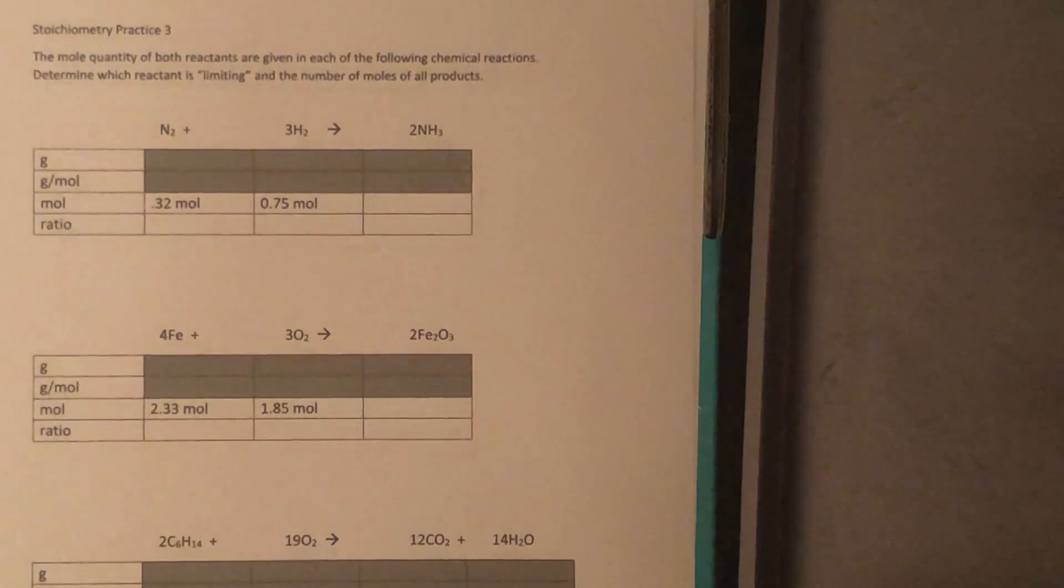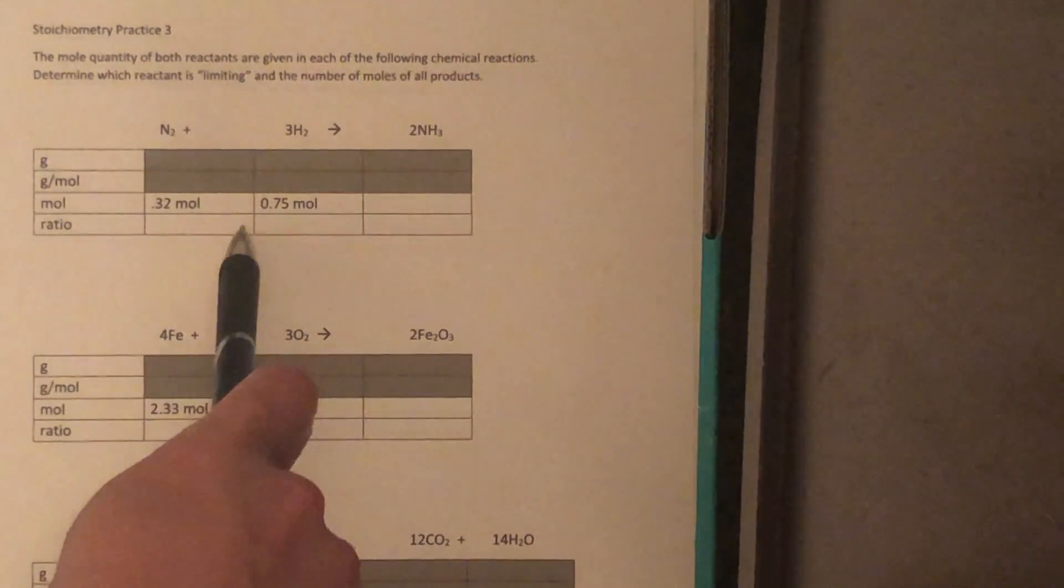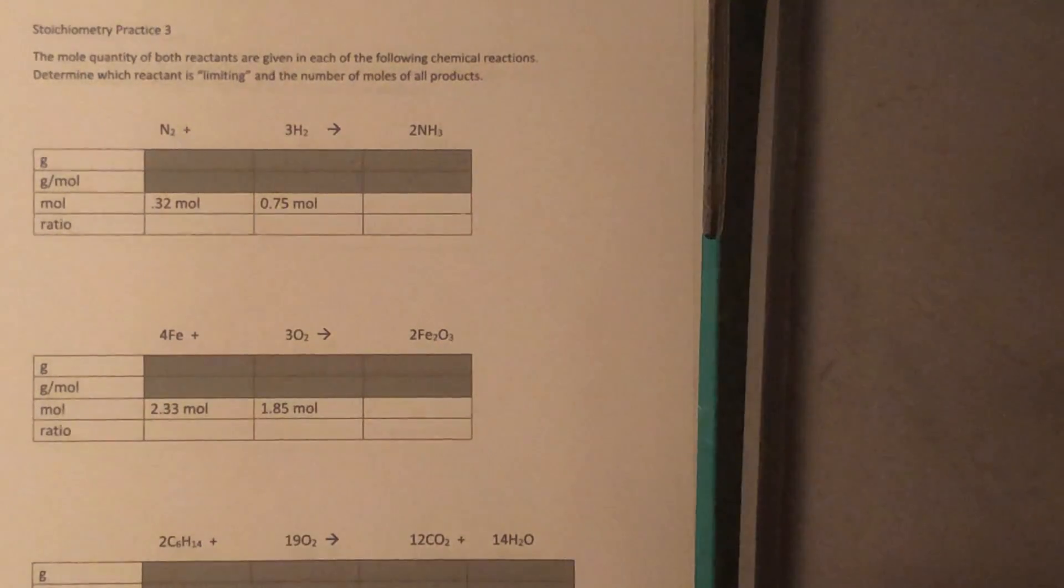This section of our stoichiometry practice focuses on limiting reactant. In other words, if we're given 0.32 moles of nitrogen and 0.75 moles of hydrogen, which one are we going to run out of first? We also need to find out how much product we are able to get based on that limiting reactant.